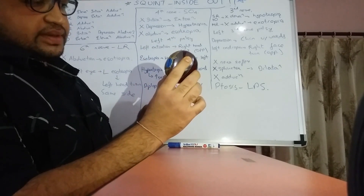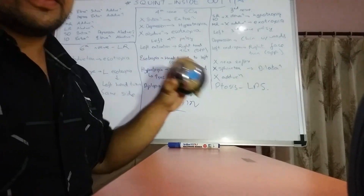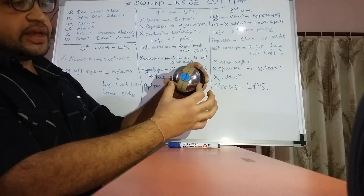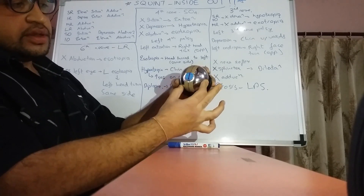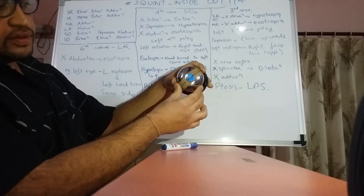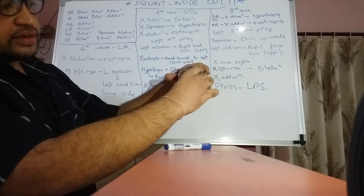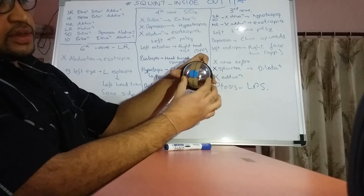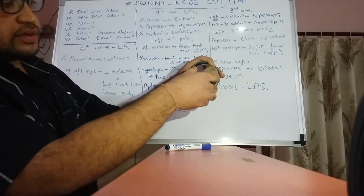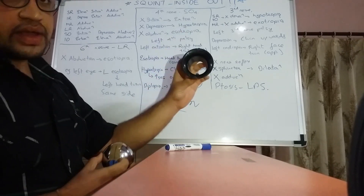Consider this gadget as an eyeball — this represents the left eye. The left eye can show esotropia, exotropia, elevation, and depression. I've drawn an axis on the eyeball: if the vertical line tilts one way, that is extorsion; the other way is intorsion. This direction is adduction, and the other is abduction.